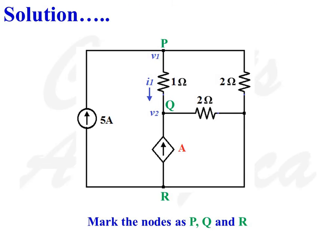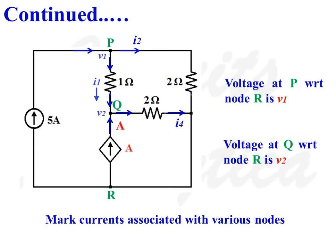The first step is to mark various nodes of the network as P, Q and reference node as R. Mark currents associated with various nodes. Voltage at node P with respect to node R is denoted as V1, while voltage at node Q with respect to node R is denoted as V2.